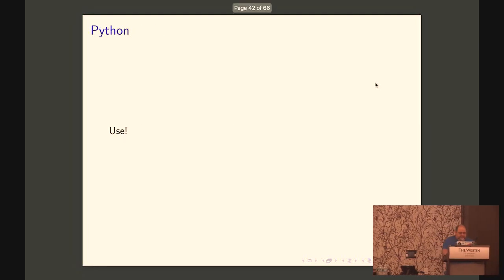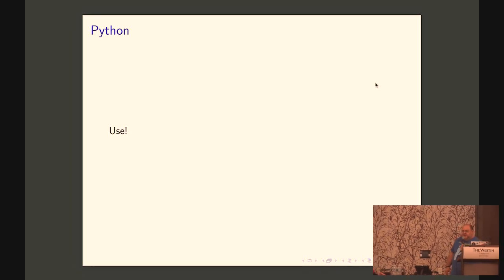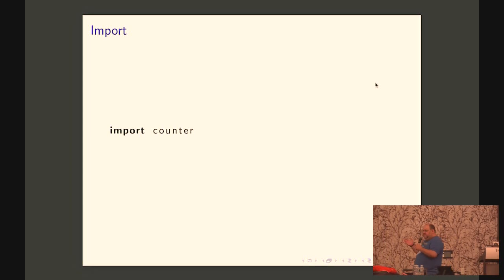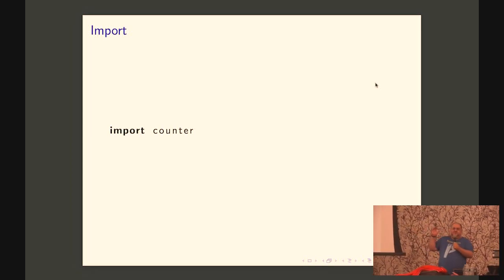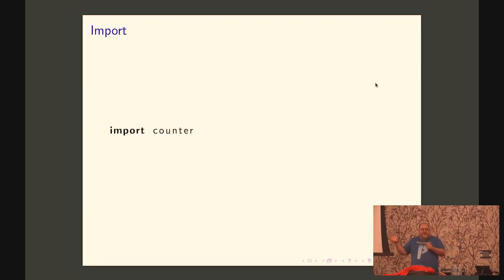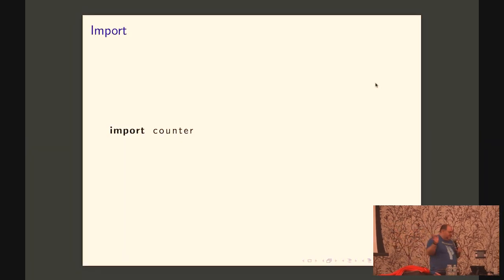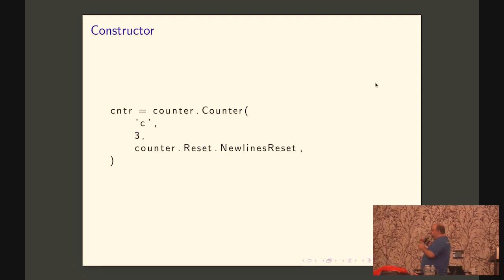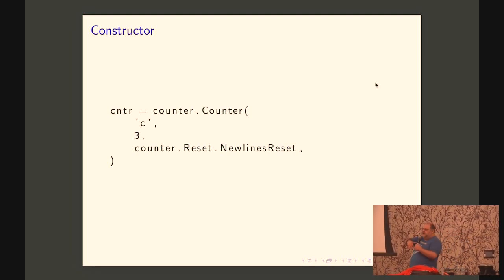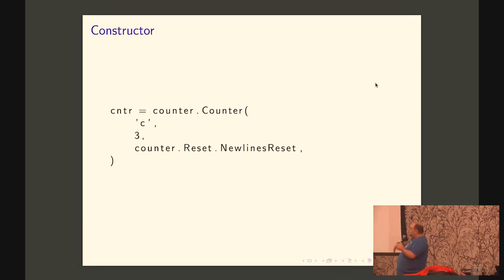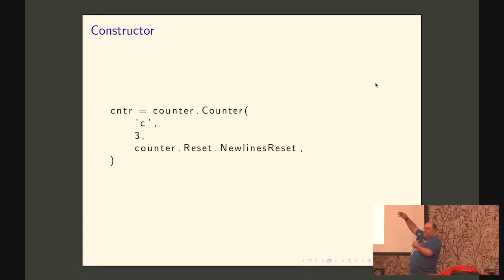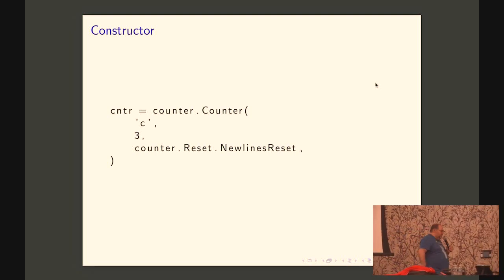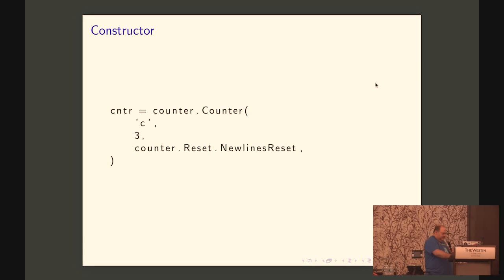So what's step number two? There is no step number two. You can just use it from Python. So I call the module counters, remember? So you need to import counter. Again, whether you use Maturin develop or you use Maturin build and pip install the wheel, you have the counter module. It's available. You create the counter object. Remember, this was kind of supposed to look like a compiler with pragmas. So you first create the counter object and then you call it. So in this case, I'm trying to count the C character. I want you to figure out if it has at least three Cs. And I want to reset on newlines. Of course, I could choose other parameters, but these parameters are just very easy to demonstrate.